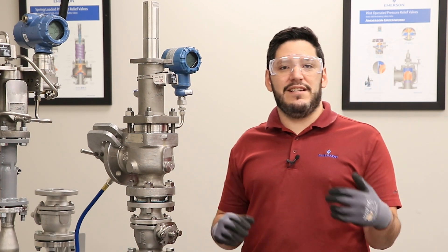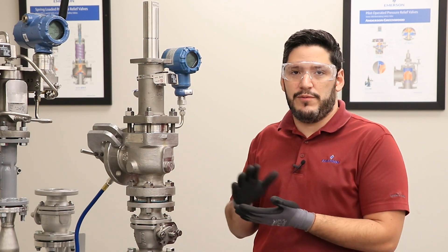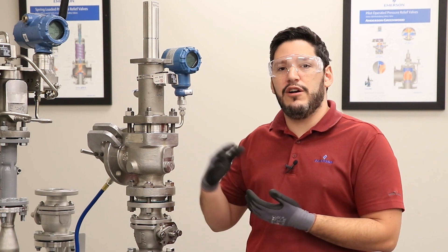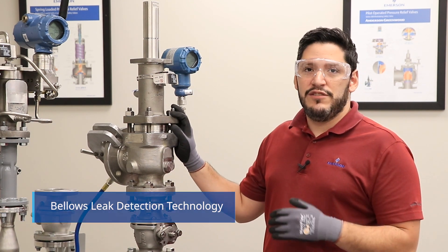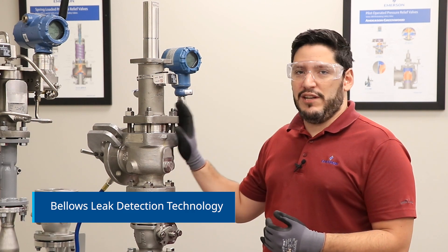Because of preventative maintenance cycles, these bellows ruptures can go undetected for long periods of time. So Emerson has developed a new solution to detect when a bellows leak in the field.